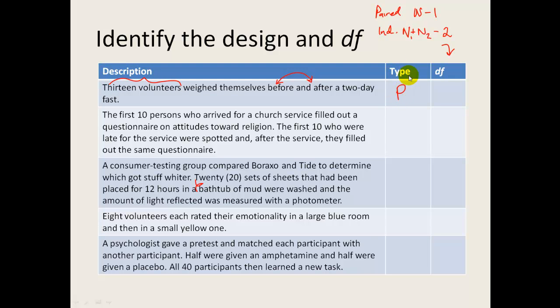The first 10 persons who arrived for a church service filled out a questionnaire on attitudes towards religion. The first 10 who were late for the service were spotted, and after the service, how polite, they filled out the same questionnaire. So these are different people. It's the same number of them, but they are different people in the sets. So that means that we're going to have two separate sets of scores for attitudes towards religion, which makes this a good independent design. And even though we have 10 and 10, I'm still going to consider them 10 plus 10 and then minus 2. Or you can think of it as 10 minus 1 plus 10 minus 1. Either way, you get 18 degrees of freedom.